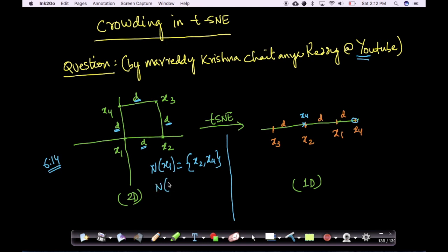Similarly, what is the neighborhood of x2? The neighborhood of x2 is again x1 and x3. Similarly, neighborhood of x3 is x4 and x2. And neighborhood of x4 itself is x1 and x3. This is in 2D.